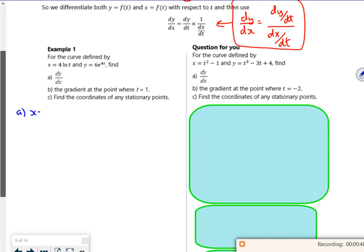So x is 4 ln t. So differentiate it dx by dt. ln t, or ln x goes to 1 over x. So ln t goes to 1 over t. I've got 4 times by 1 over t. I've got 4 over t. Job done.